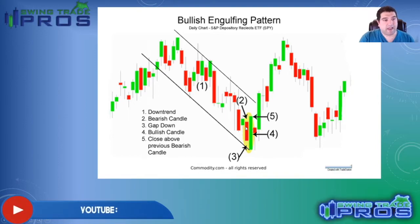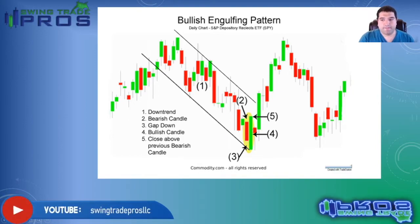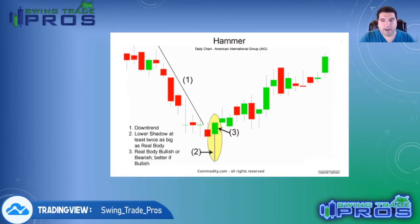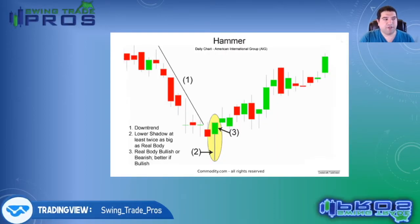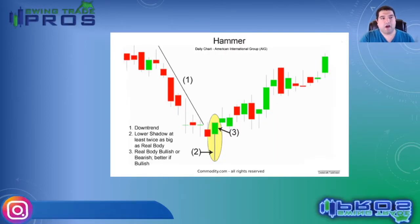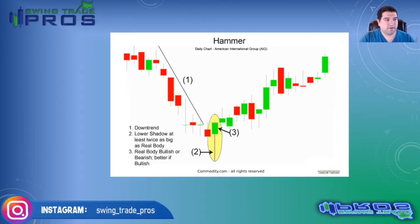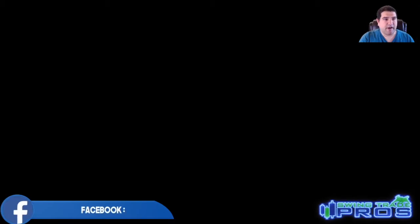Our bullish engulfing pattern — this big candle bar engulfs or is bigger than the previous candle, which is what the word engulfing means. And then our regular hammer candle. I'm definitely going to show some of these on the charts in just one second. That's the end of the slideshow and we're going to get to the charts.